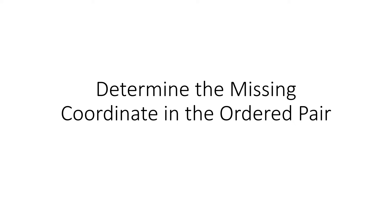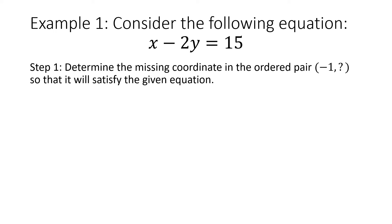Determine the missing coordinate in the ordered pair. Example 1: consider the following equation, x minus 2y equals 15. Step 1: determine the missing coordinate in the ordered pair, negative 1, question mark, so that it will satisfy the given equation.